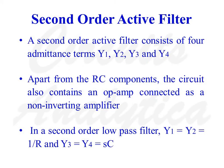A 2nd order active filter consists of 4 admittance terms: Y1, Y2, Y3, and Y4. Apart from the RC components, the circuit also contains an op-amp connected as a non-inverting amplifier. In a 2nd order low pass filter, Y1 = Y2 = 1/R and Y3 = Y4 = sC.